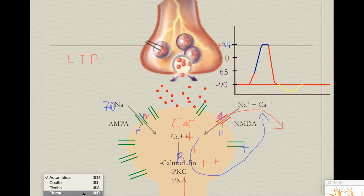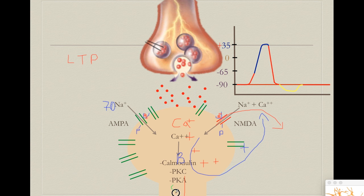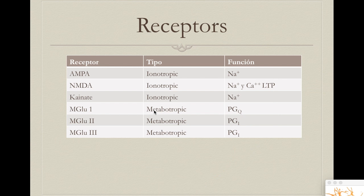LTP is the molecular basis of processes as important as memory. Chronic pain, for example, is a synapse that has learned to always feel pain. Calcium entry also generates changes in gene expression — some proteins may be over-expressed or under-expressed. So we not only have old receptors working extra time, but we also have many new extra receptors being produced.